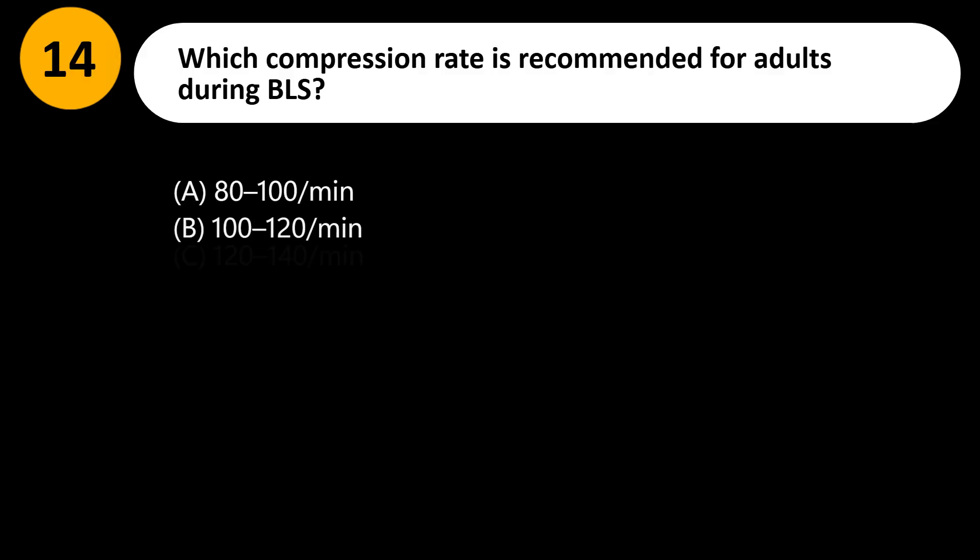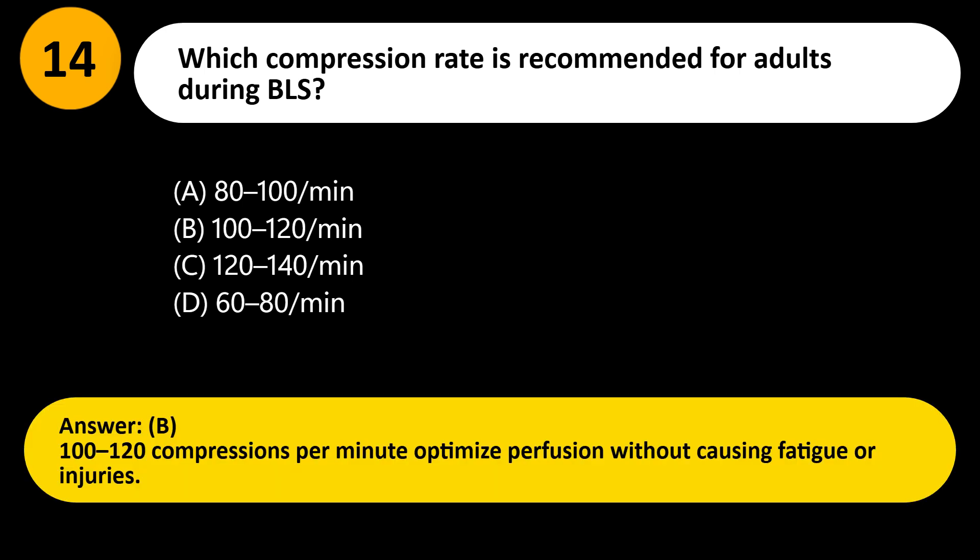Which compression rate is recommended for adults during BLS? A) 80–100/min, B) 100–120/min, C) 120–140/min, D) 60–80/min. Answer: B. 100 to 120 compressions per minute optimizes perfusion without causing fatigue or injuries.